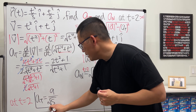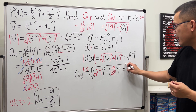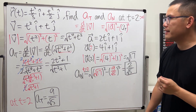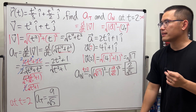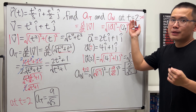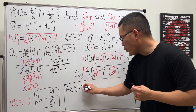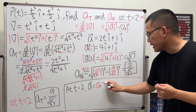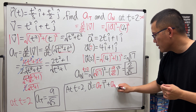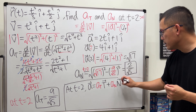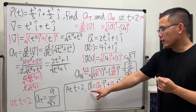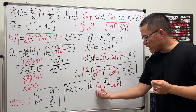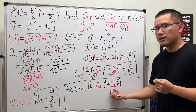So we are done: Aₜ = 9/√5 and Aₙ = 2/√5. From a previous video, we found the unit tangent vector T and unit normal vector N for this curve. At t = 2, we can write the acceleration as a linear combination: a = Aₜ·T + Aₙ·N, meaning acceleration is expressed as scalar multiples of T and N.